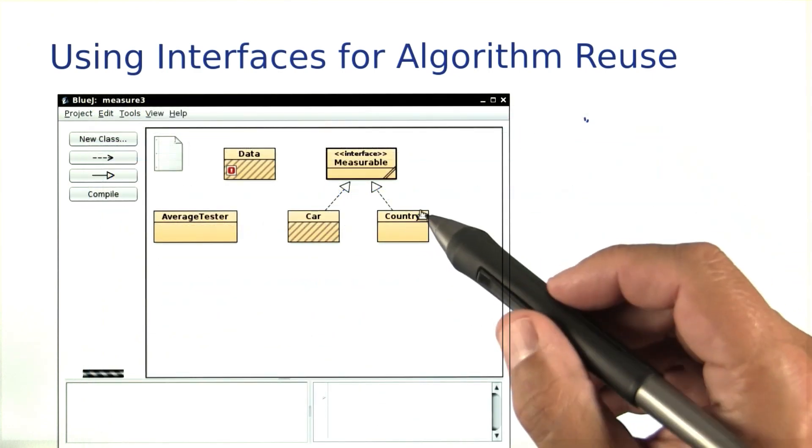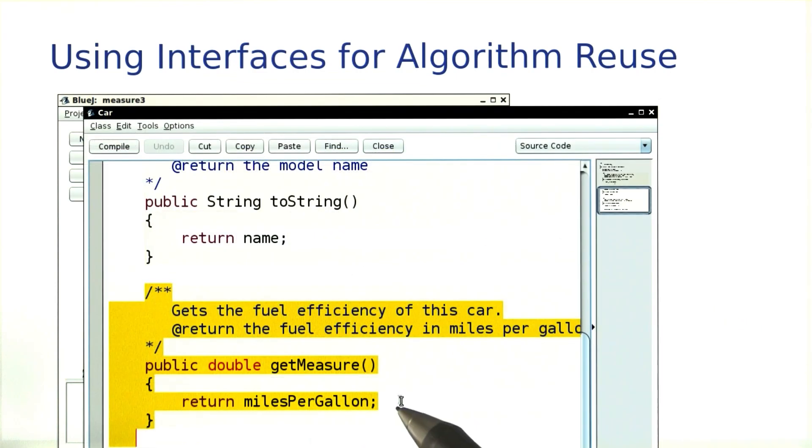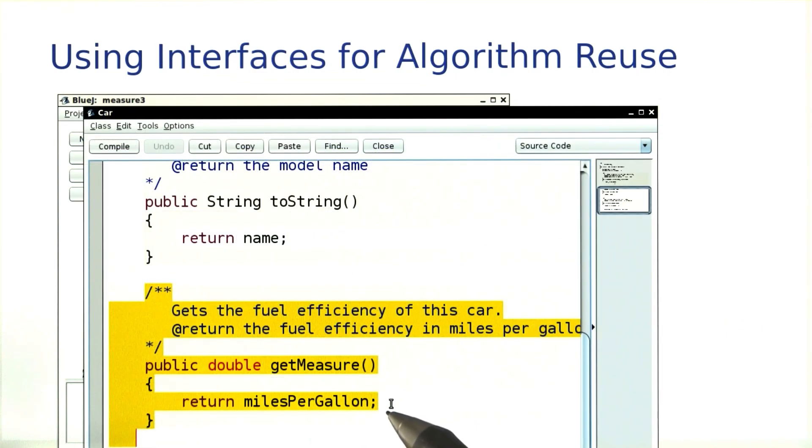For example, the country class implements getMeasure to return the area. The car class has the same method, return miles per gallon.